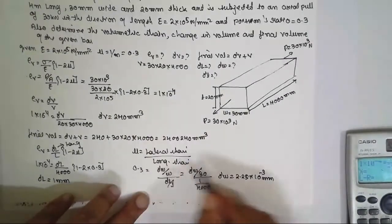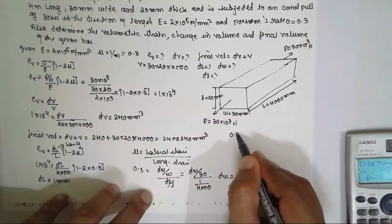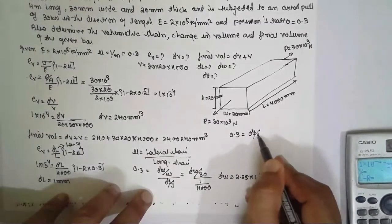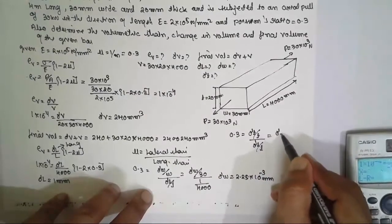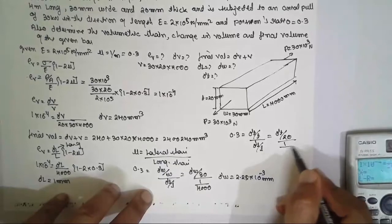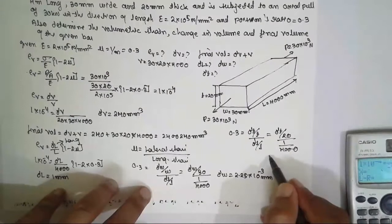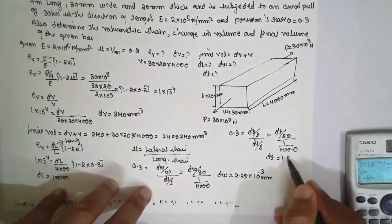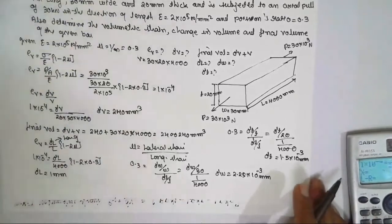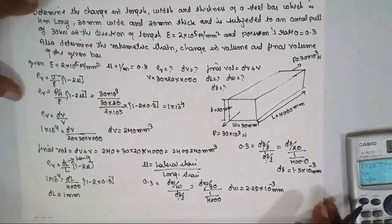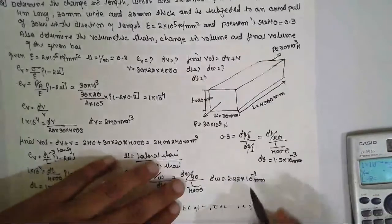For ΔT: 0.3 = (ΔT/T)/(ΔL/L), so 0.3 = (ΔT/20)/(1/4000). Solving: ΔT = 1.5 × 10⁻³ mm. In this way, you solve the problem of volumetric strain for a rectangular bar subjected to a single axial force. I am Satyash Ghazankar. Thank you very much.